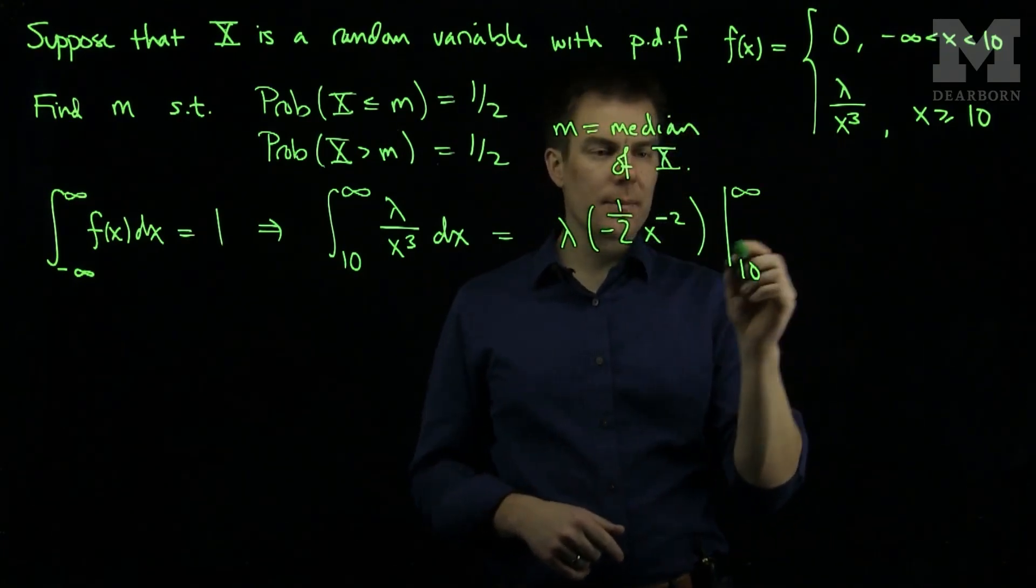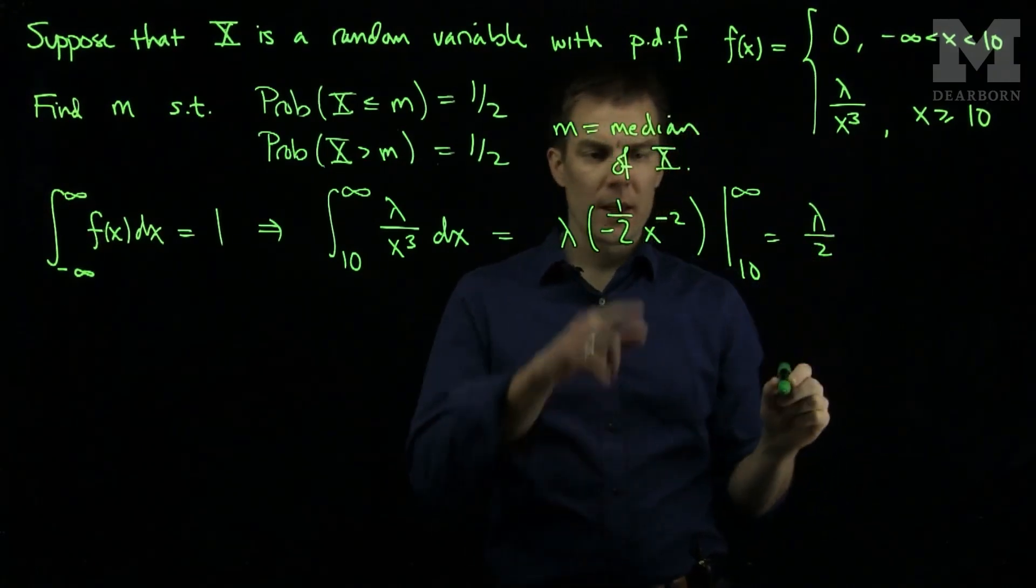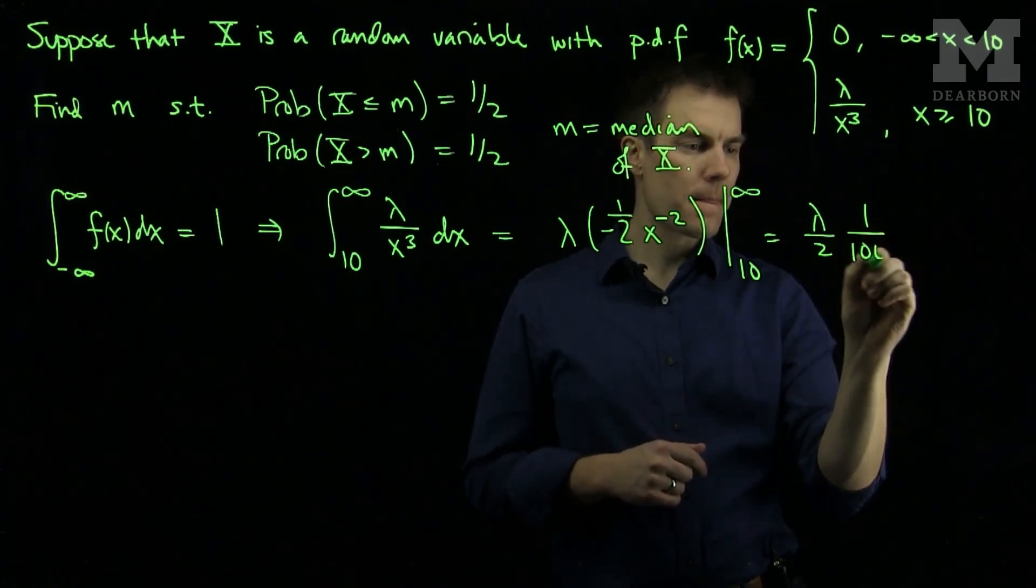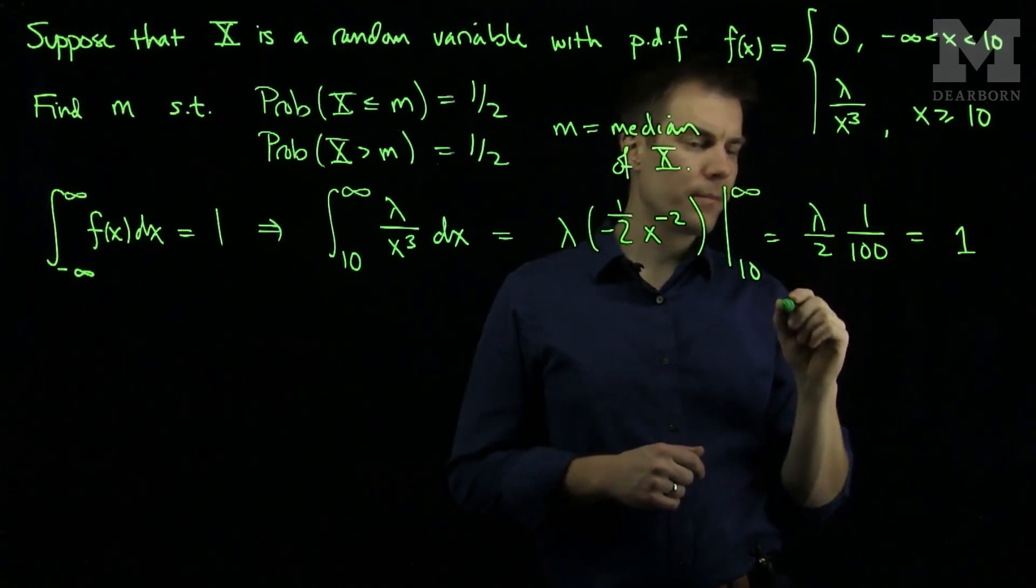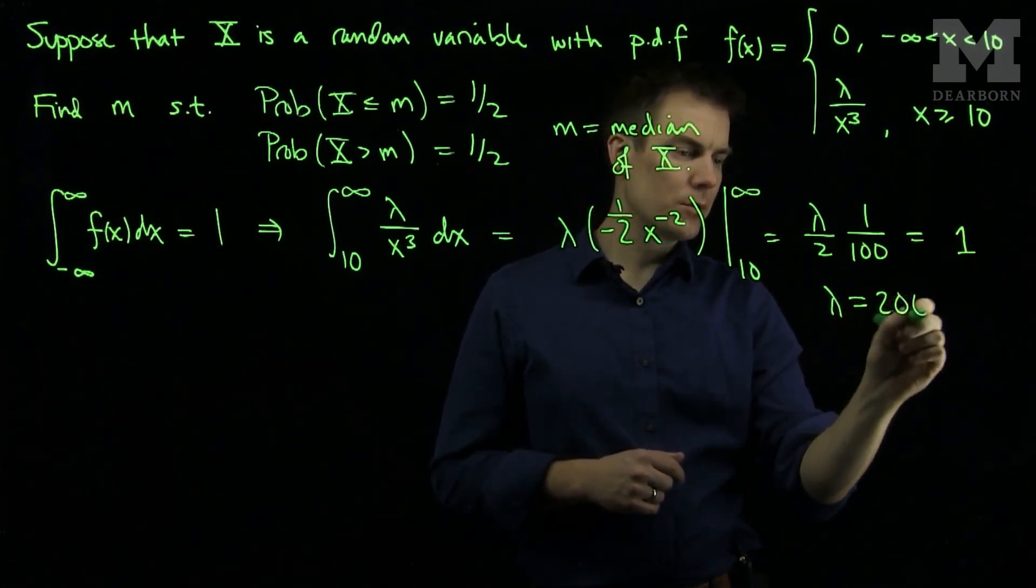So when we plug in 10 that will be the bottom, so I am going to have lambda over 2, and then I will have 1 over 10 squared so that will be 1 over 100. And this has to be equal to 1. So from this we see lambda has to be equal to 200.